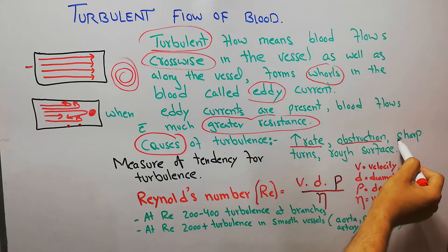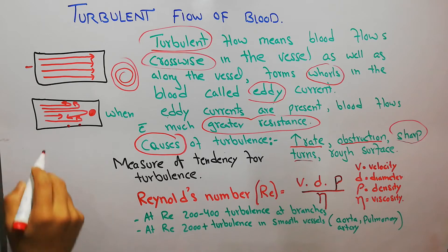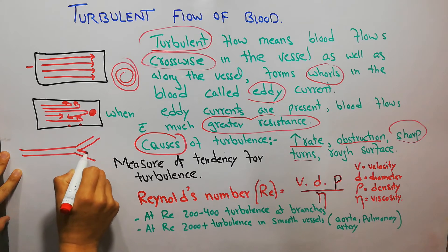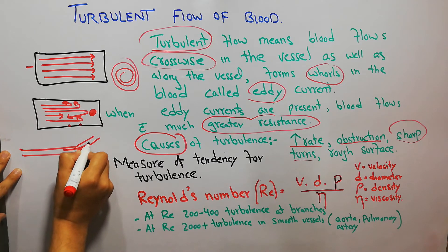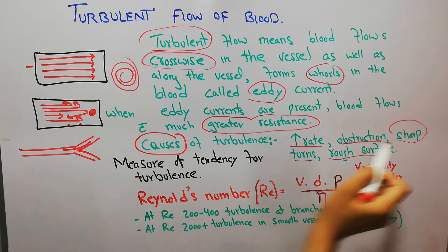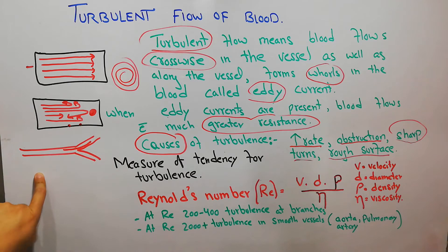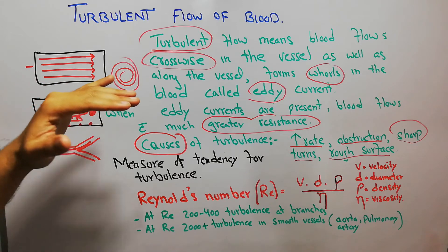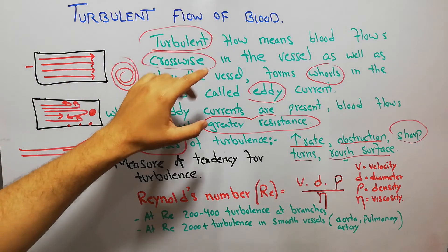Another cause is sharp turns in the blood vessel — for example, where a blood vessel divides into two branches. At these sharp turns with high flow rate, there is a high chance of turbulence. Finally, rough surface: if the inside of the blood vessel is not smooth — for example, due to cholesterol deposits or atheromas — it will also lead to turbulence.